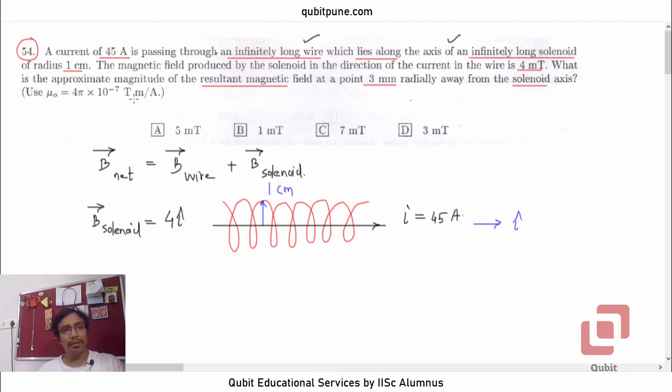Now, what do we want? We want to determine the approximate magnitude of the resultant magnetic field at a point 3 mm radially away from the solenoid axis. So let us say that point is located somewhere here. And this distance from the axis is 3 mm. We have to now use the Ampere circuit law to determine the magnetic field at this particular point, or you can directly use the formula. The formula is μ₀i/2πr, where r is the distance of the point where you want to determine the magnetic field from the current carrying straight infinitely long conductor.